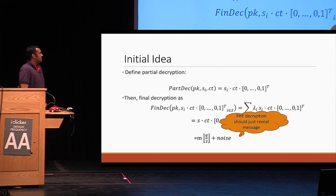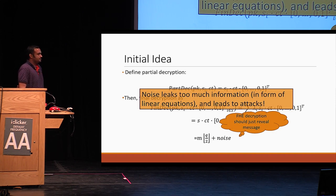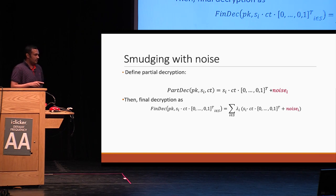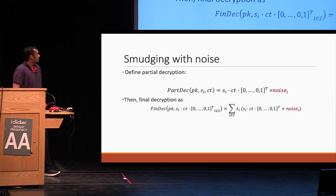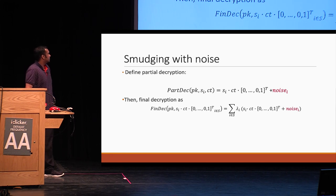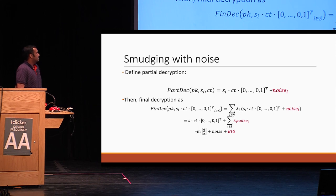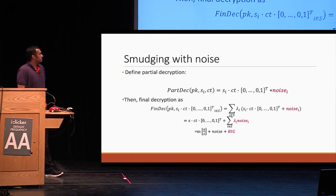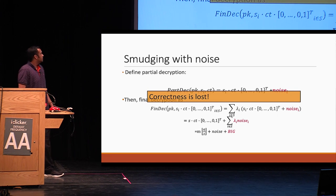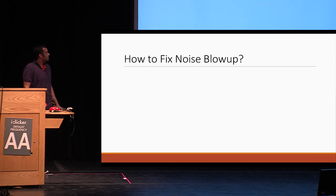But now we know that FHE decryption should just reveal the message and nothing more. In fact, revealing this noise turns out to be fatal and just leads to attacks. So how do we hide the FHE noise? The idea is that we can perturb these partial decryptions with some further noise in a hope that it will hide the FHE noise. We define final decryption as the lambda linear combination of these partial decryptions. But when you evaluate it further, what you get is S times CT times [0,0,1]^T plus a linear combination of noise. We run into correctness issues because the lambda combination of noise is just too big, since these Lagrange coefficients can be huge — so correctness is lost.